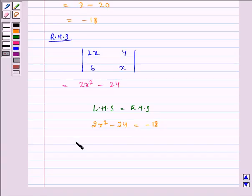Now solving this, it implies 2x squared equals minus 18 plus 24, which implies 2x squared equals 6.